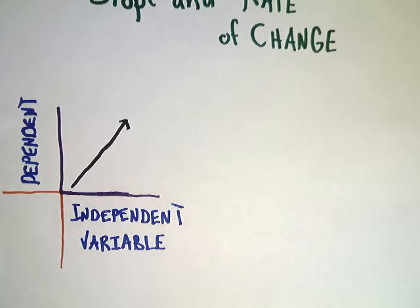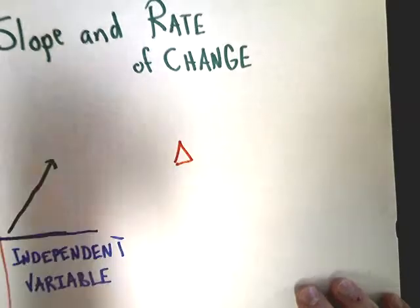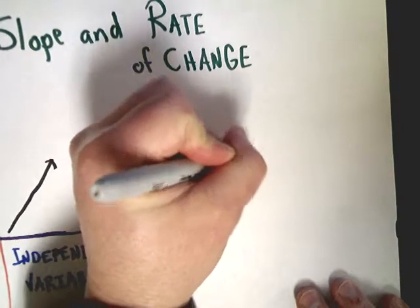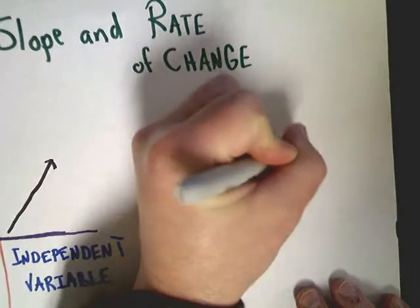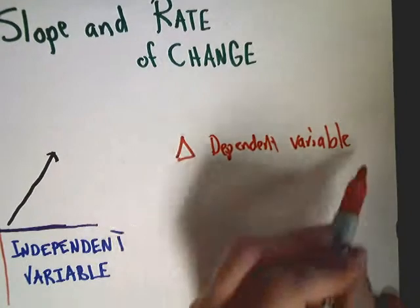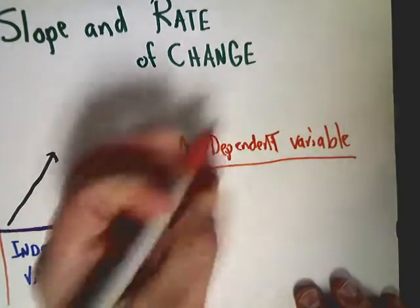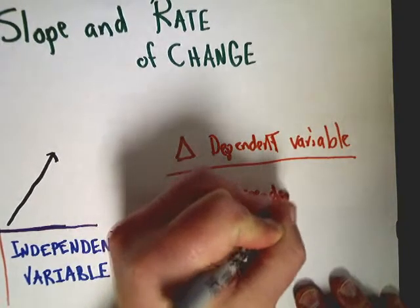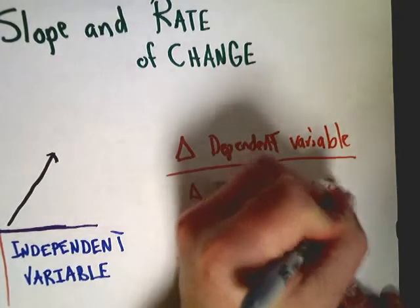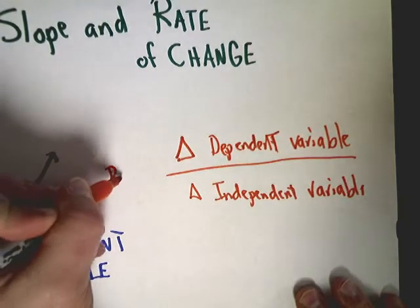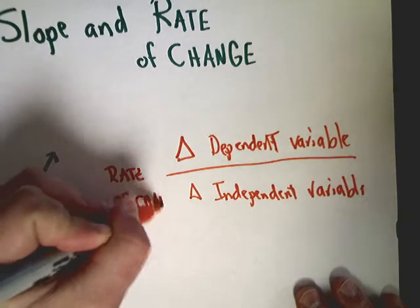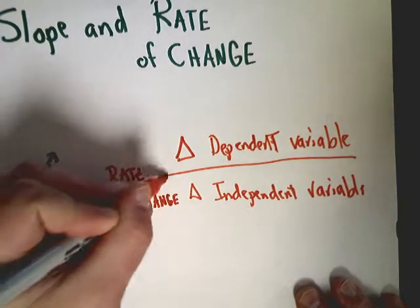Now, in order to find slope and rate of change, what I'm really looking at is the change, I'm going to make a little triangle to represent change, of the dependent variable as it relates to the change in the independent variable. And that's my rate of change. What I'm looking at is how one changes in relation to the other.